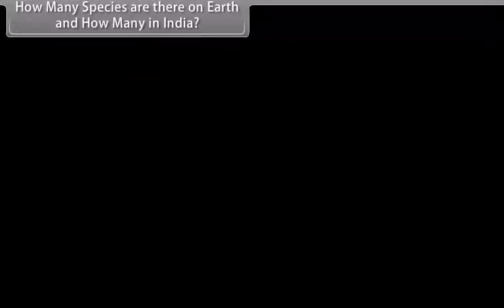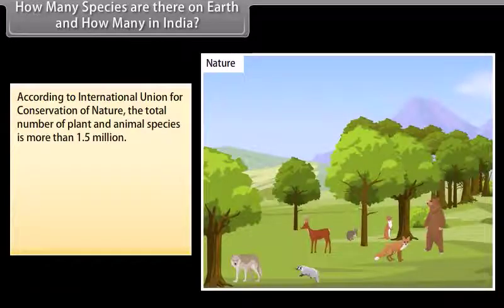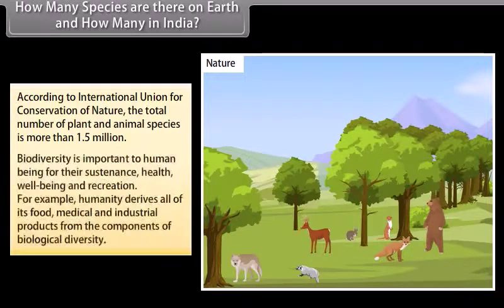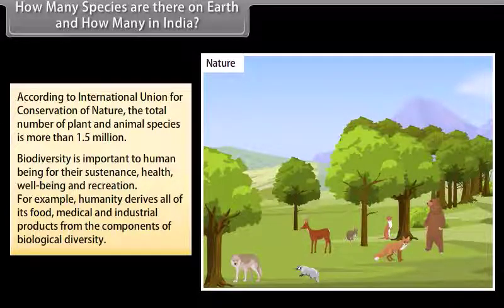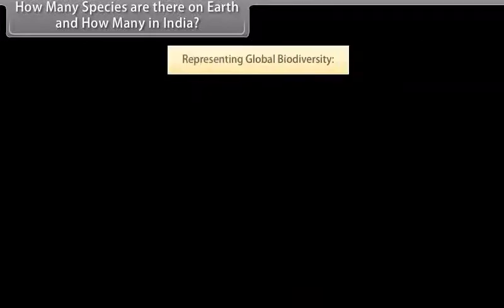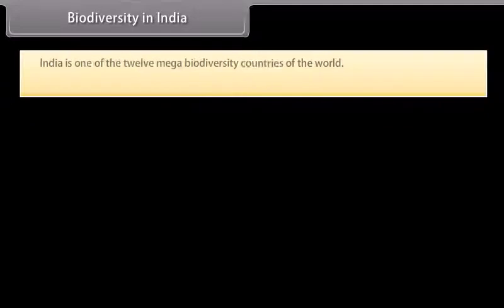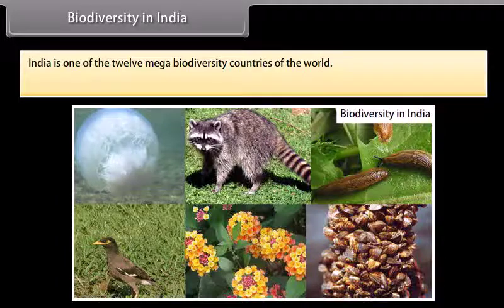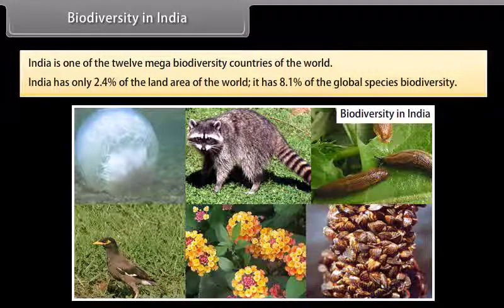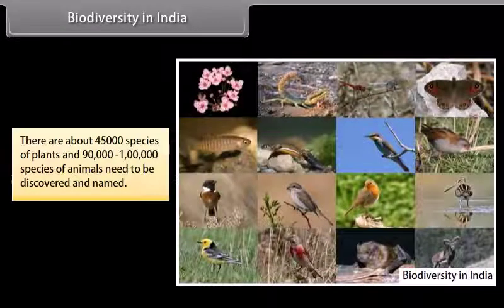How many species are there on earth and how many in India? According to the International Union for Conservation of Nature, the total number of plant and animal species is more than 1.5 million. India is one of the 12 mega biodiversity countries of the world, with only 2.4% of the land area but 8.1% of the global species biodiversity. There are about 45,000 species of plants and 90,000 to 1,000,000 species of animals yet to be discovered and named.